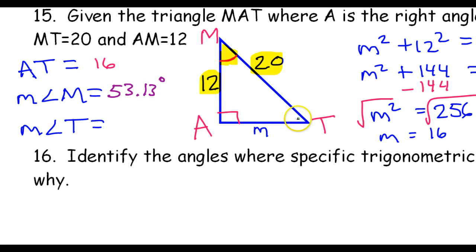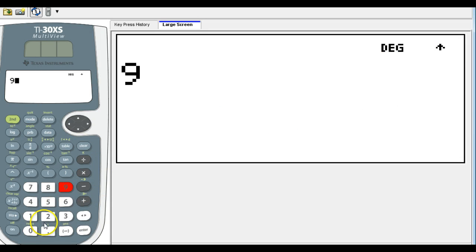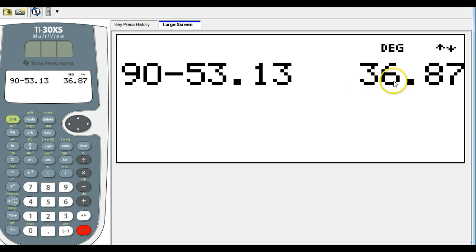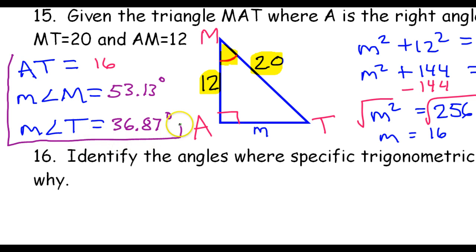To find the measure of angle T, I could use the sine function, opposite over hypotenuse. Or, if I'm confident that I got angle M right, I can just subtract from 90, because these two acute angles have to be complementary — they have to add up to 90. So 90 minus 53.13 equals 36.87 degrees. So there we have solved the triangle.